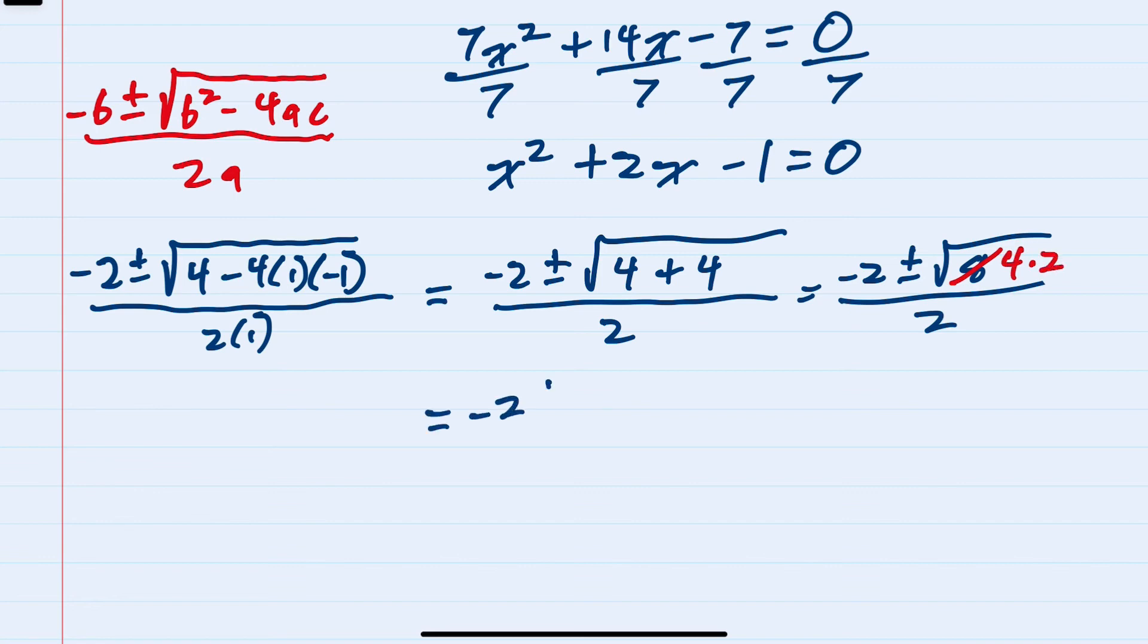Simplifying further, this radical can simplify since eight is four times two. Then this would be negative two plus or minus the square root of four, which is two, so that can come outside leaving the other two inside, all over two.